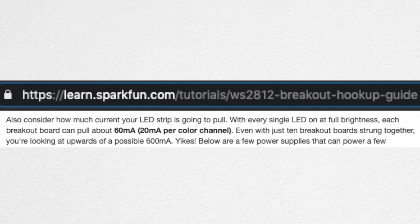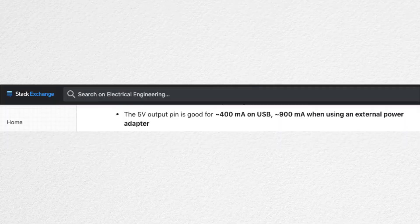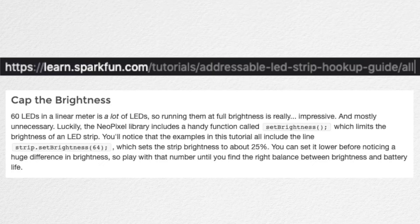In terms of powering the LED, each LED can pull about 60mA at full brightness with all three RGB values at maximum. The USB interface limits power consumption to 500mA, so you won't be able to have a super long and bright LED strip just with a laptop-powered Arduino. One option is to lower the brightness, which we'll learn how to do in a few minutes.